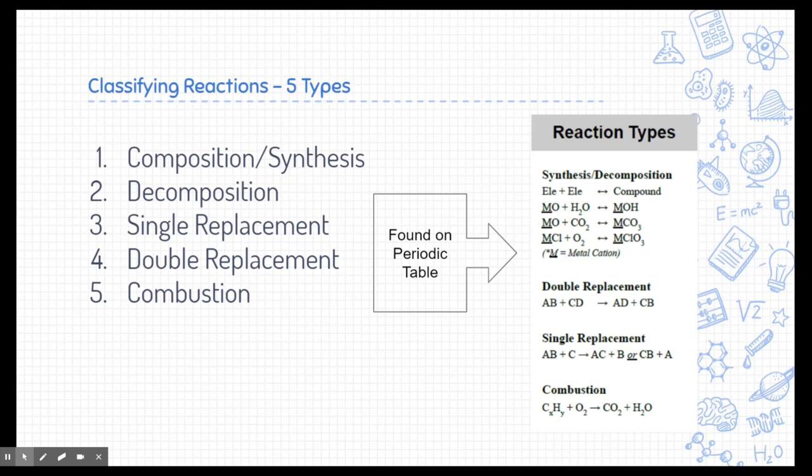Now we're going to go through examples of each of these, and you'll be able to see how we classify these reactions based on how the elements are being formed and rearranged inside the entire equation. One thing to note is if you look on the periodic table that's given to you in class, you're going to see the reaction types. You don't need to memorize these different classifications and how they form. All you need to be able to do is use this resource to be able to classify those reactions. Please use these resources.